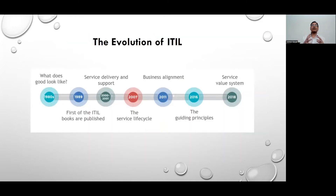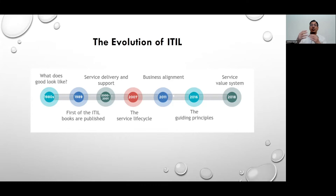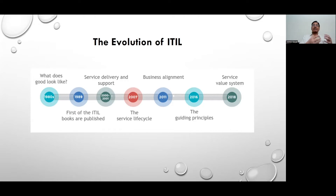ITIL as a subject has evolved over almost the last 30 years. It started from version 1 somewhere in the 80s, and initially the concept was popular as service delivery and service support. The entire framework was divided into the customer-oriented service delivery and the back-end called service support. Service support took care of back-end agreements with various suppliers and deploying people. Service delivery was the customer-facing work, ensuring services were finally available to end users.